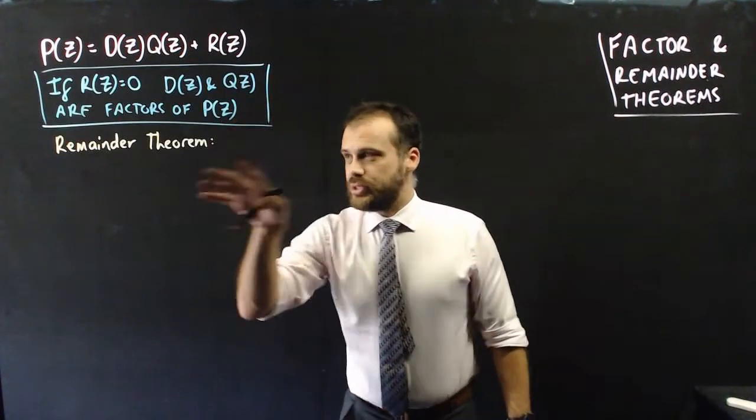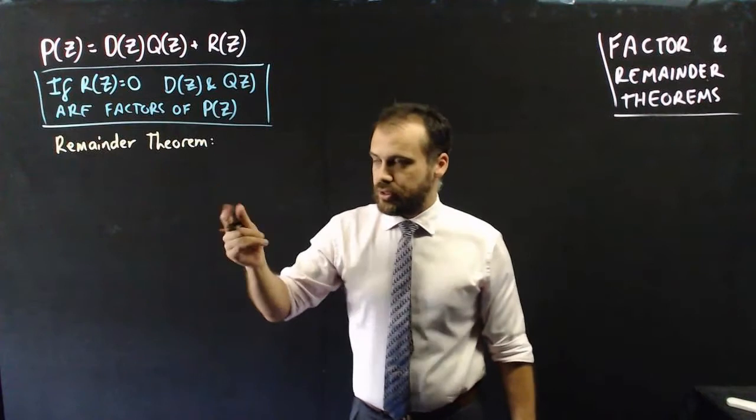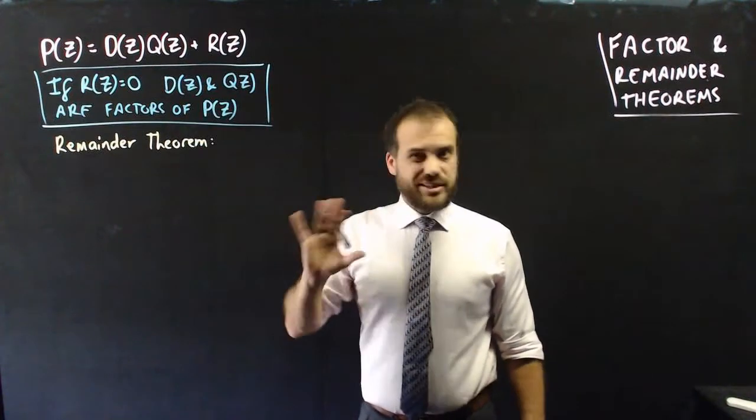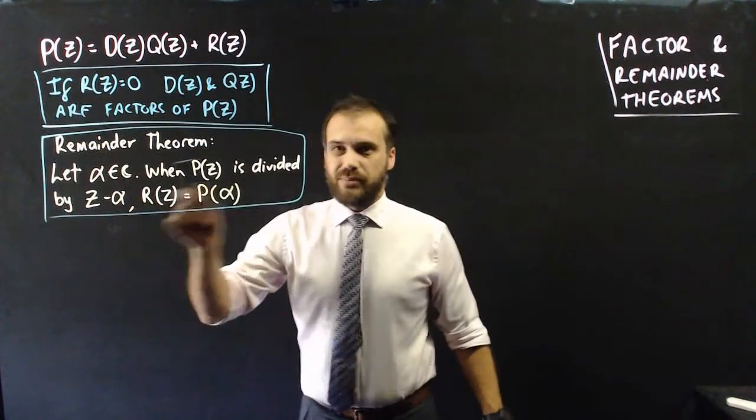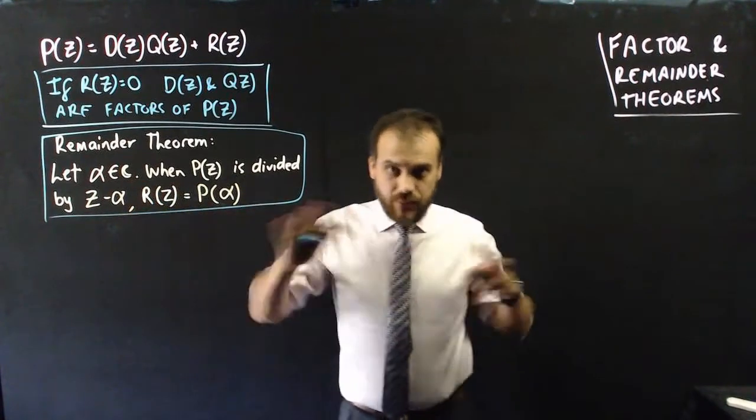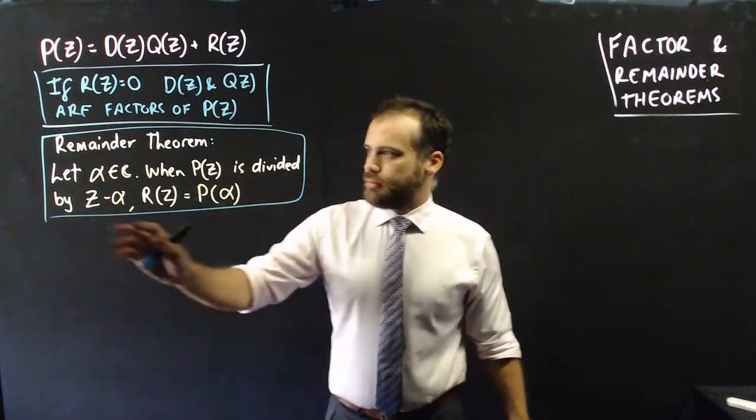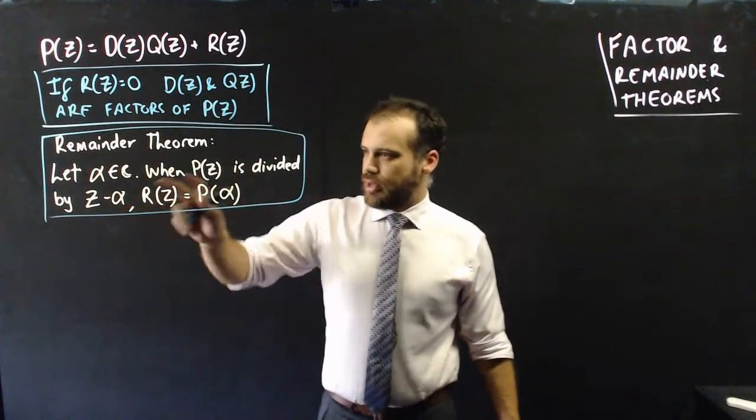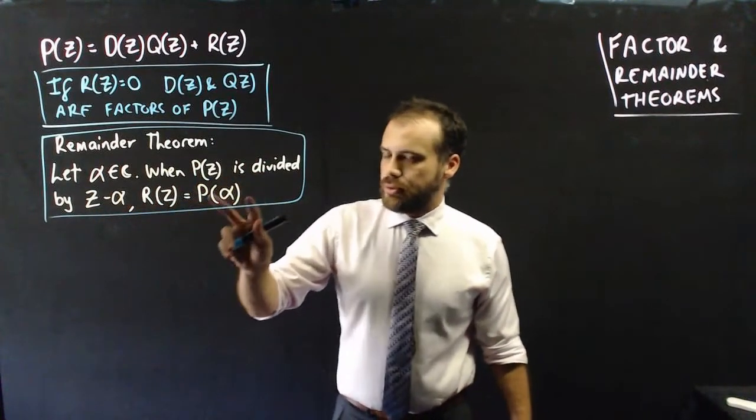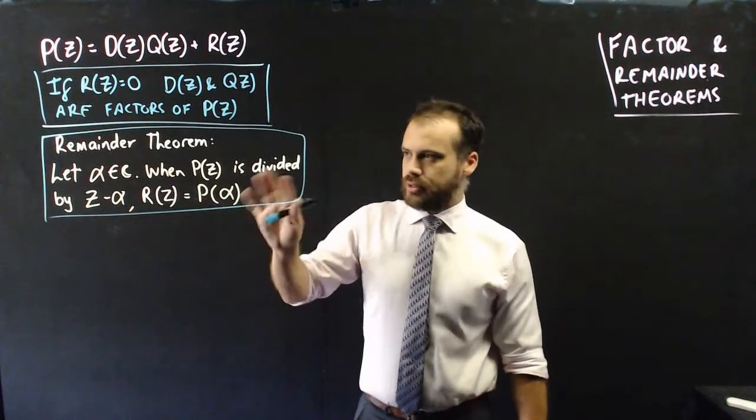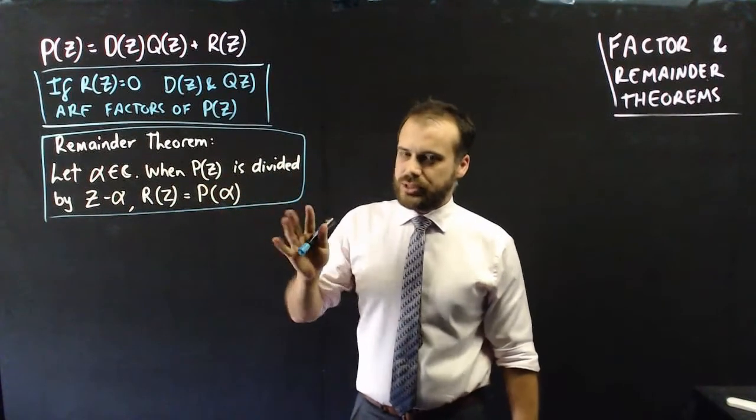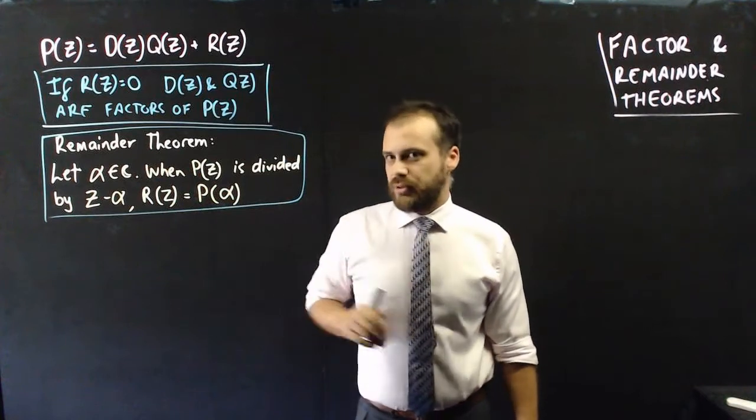So now that we've established that, we can talk about something called the remainder theorem. So the remainder theorem states the following. Let alpha be some number, complex or real, doesn't matter, but anywhere in that space. When P of z is divided by z minus alpha, then the remainder is equal to P alpha. Now, that's a big lot of words and doesn't really make a lot of sense. If I show it to you, it'll make perfect sense.